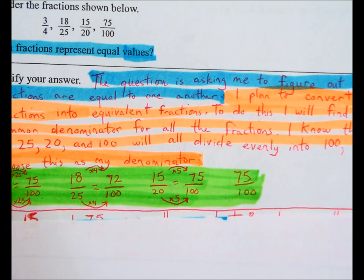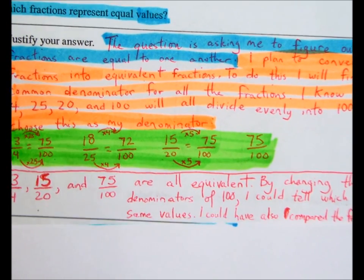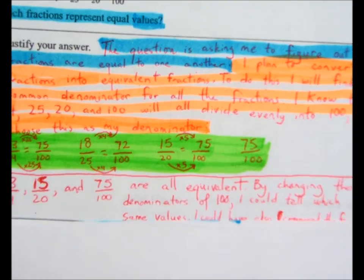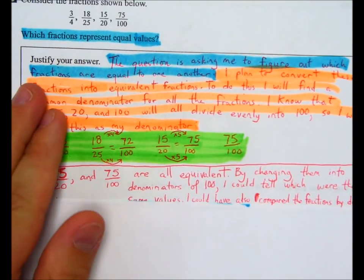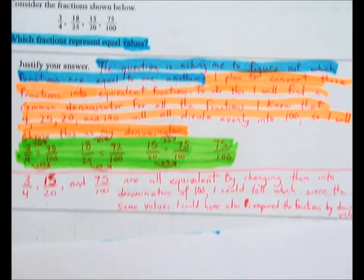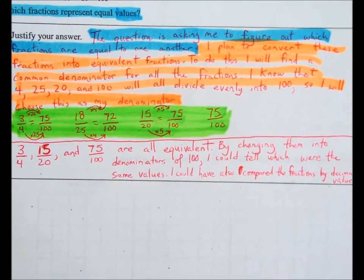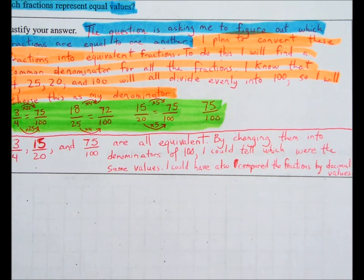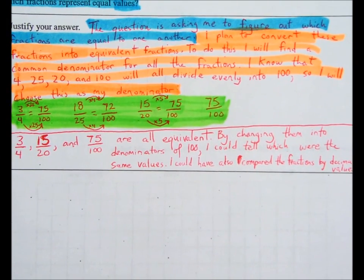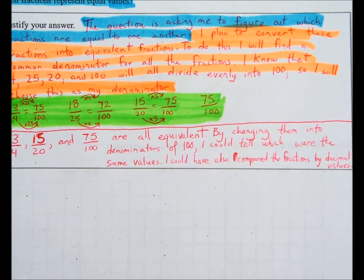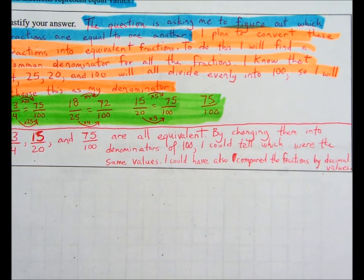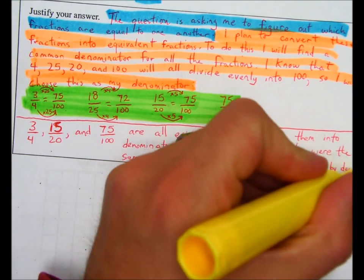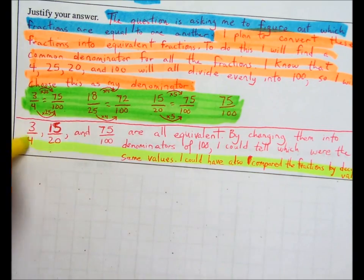And last but not least, I am going to explain my answer. Note that I set it off a little bit by creating a little division line there, just dividing the top part from the bottom part. And so here's how I explain my answer: Three-quarters, 15-20ths, and 75-100ths are all equivalent. By changing them into denominators of 100, I could tell which were the same values. I could have also compared the fractions by decimal values. And as you can see, I ran out of space there. In an ideal world, I probably would have explained how I would have gotten those decimals, but I did run out of space there. So I will outline this in yellow, step four.